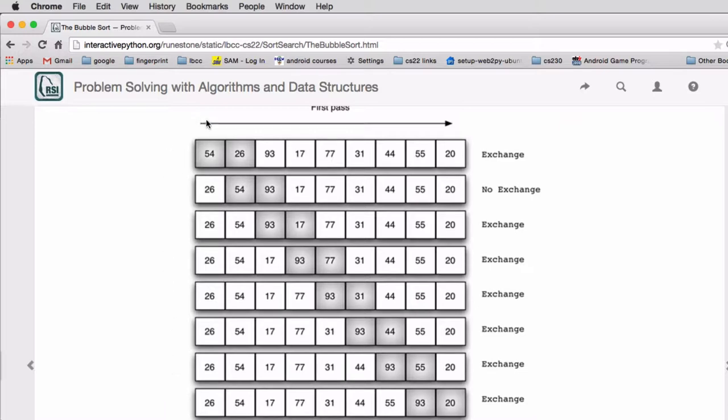It sets a pointer to the first item in the list and compares it to the second item in the list. And if they're out of order it swaps the two. In essence it's moving the item that should go to the right to the right.